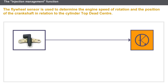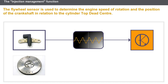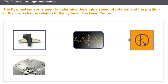The flywheel sensor is an inductive sensor located opposite a toothed target fitted on the flywheel. The sensor signal is used to determine the speed of rotation of the target and hence the engine. The toothed target also has one or more double teeth, which produce a special signal on the inductive sensor.